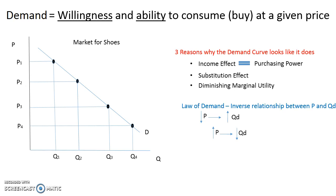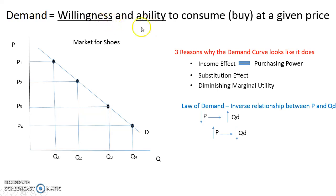When we talk about quantity demanded, we talk about how much of a product people are demanding. At a given price, how many shoes are people demanding or willing to buy? The price is constant, and what we're looking at is the quantity demanded — the willingness and ability.